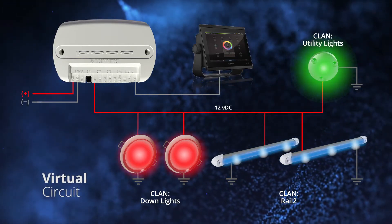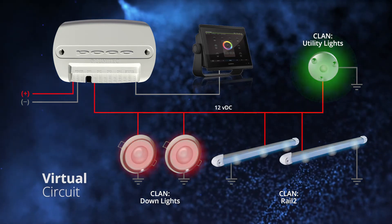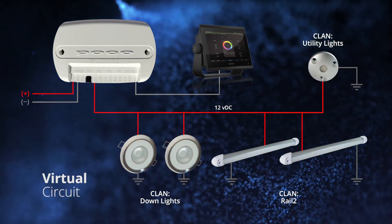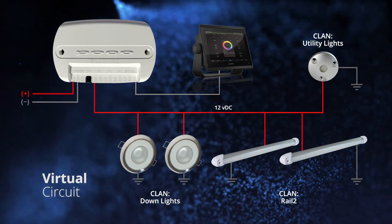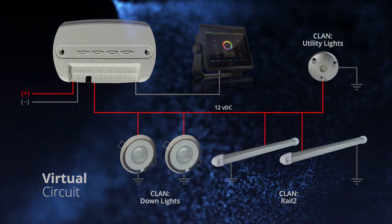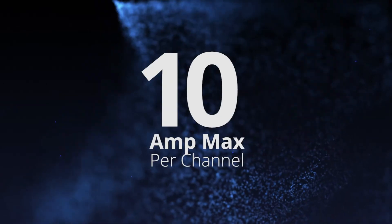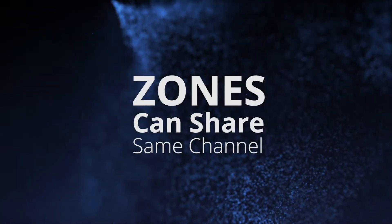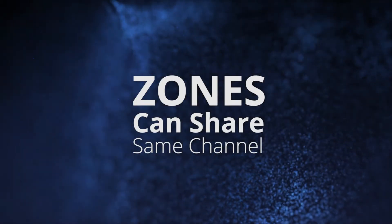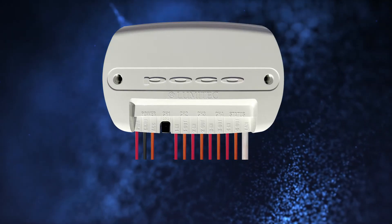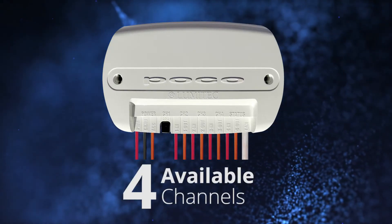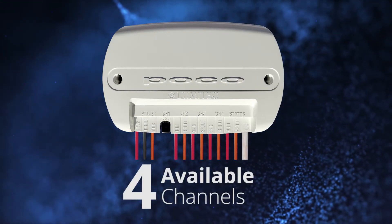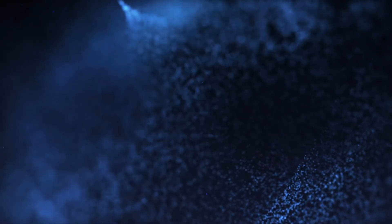This also applies to light intensity. This means you can group multiple light families on one channel, as long as you don't exceed the maximum amp draw of 10 amps per channel. Different light zones on your boat can therefore share the same channel, and all zones can be distributed over the four available channels on the POCO module, as long as the maximum amp draw is not exceeded.